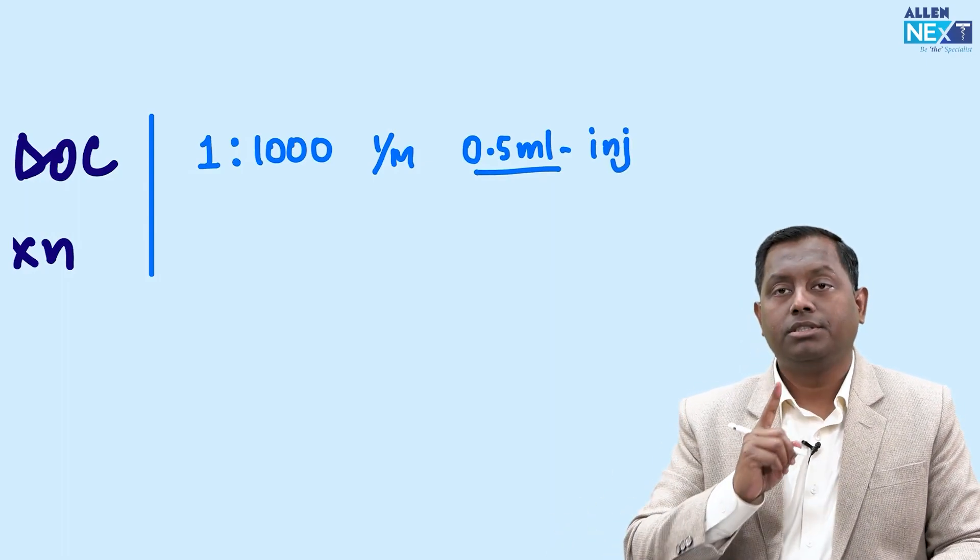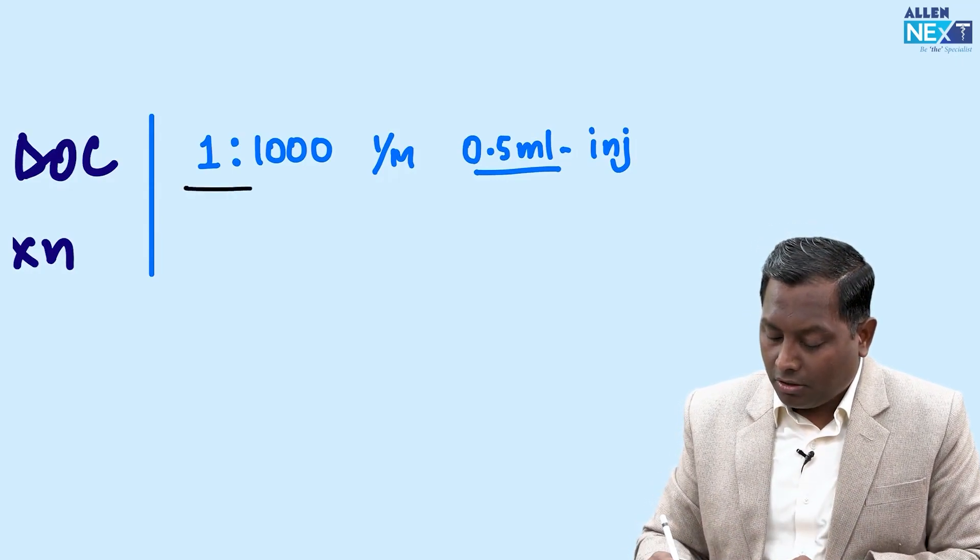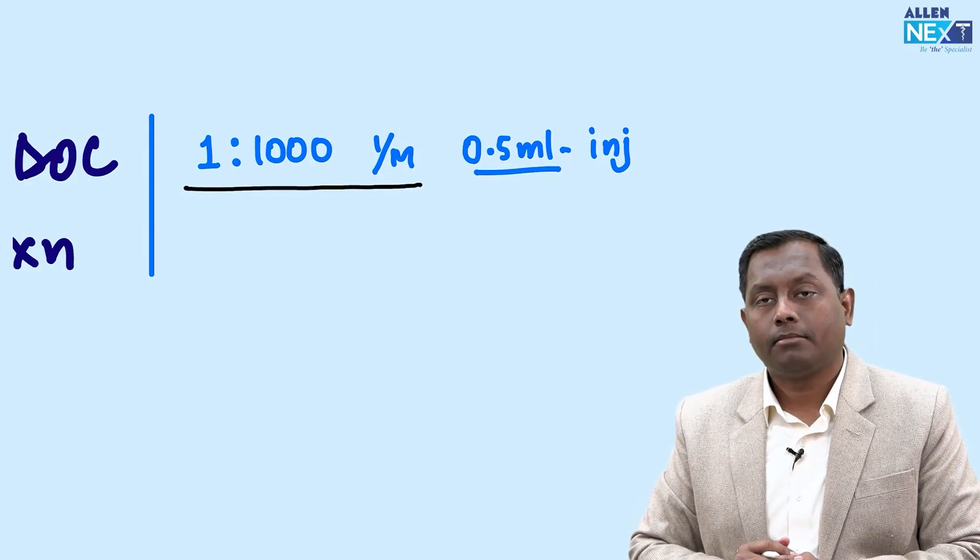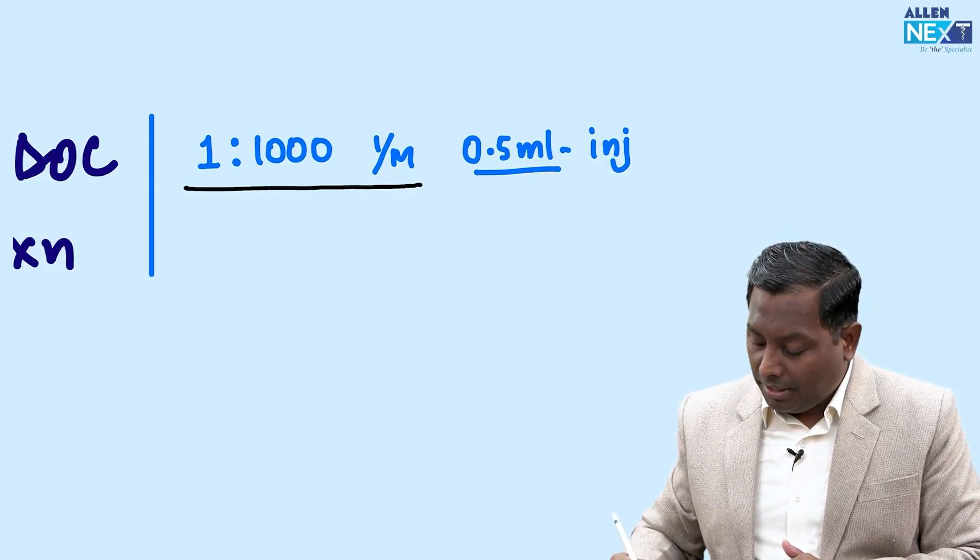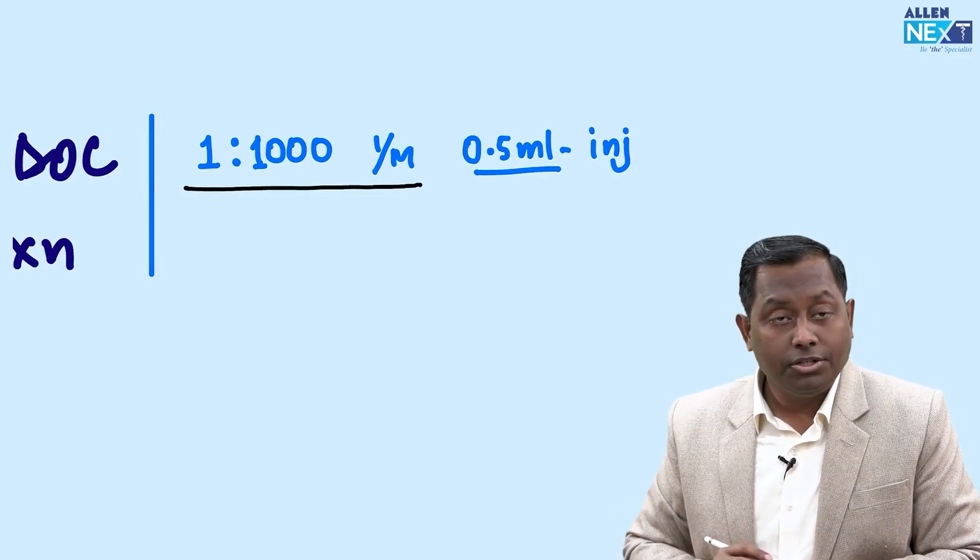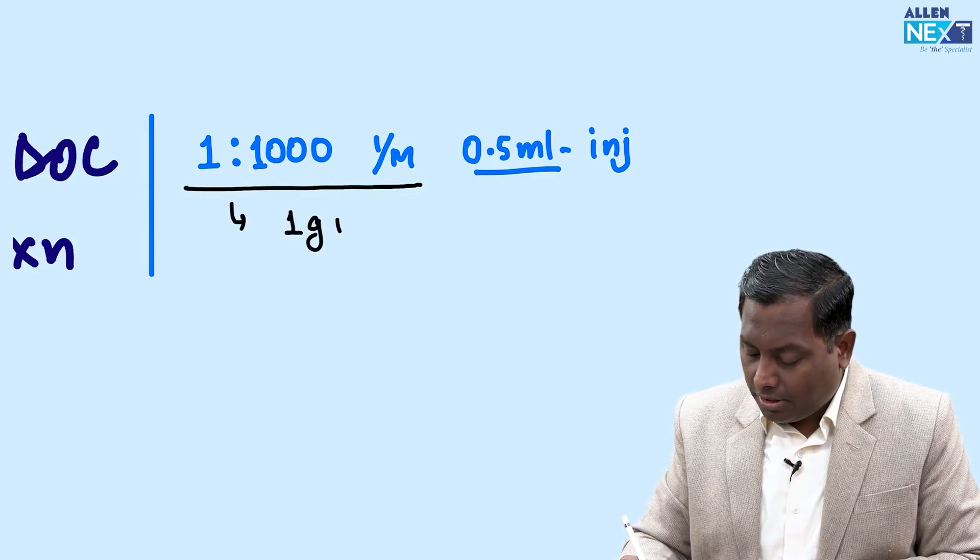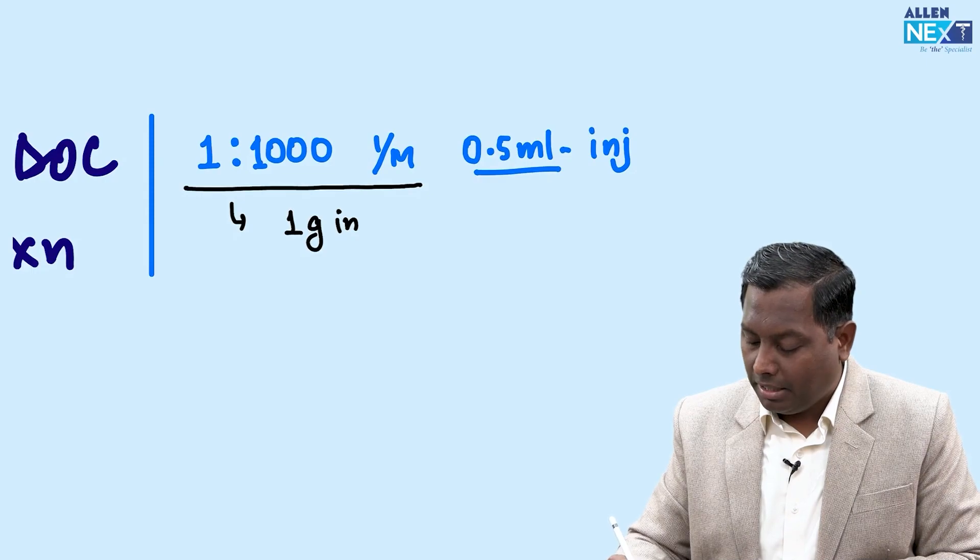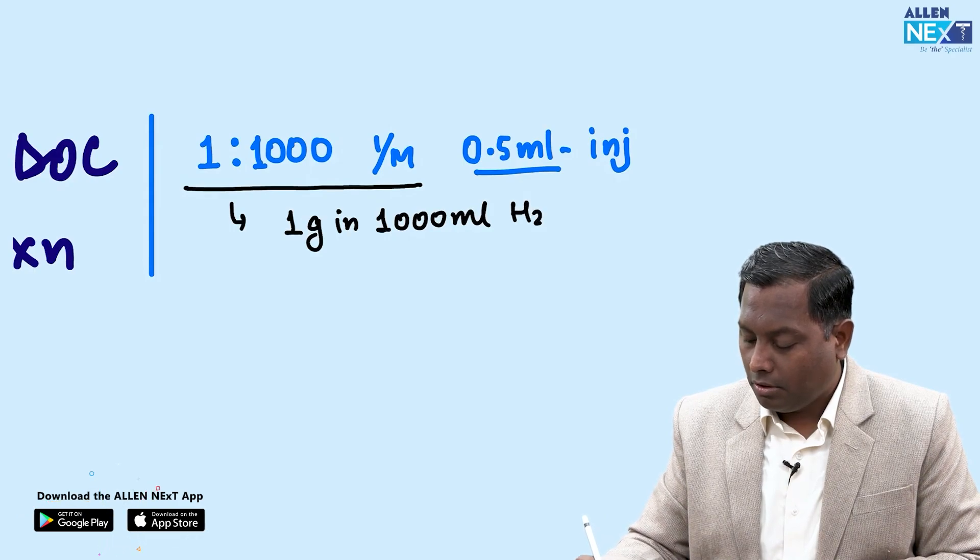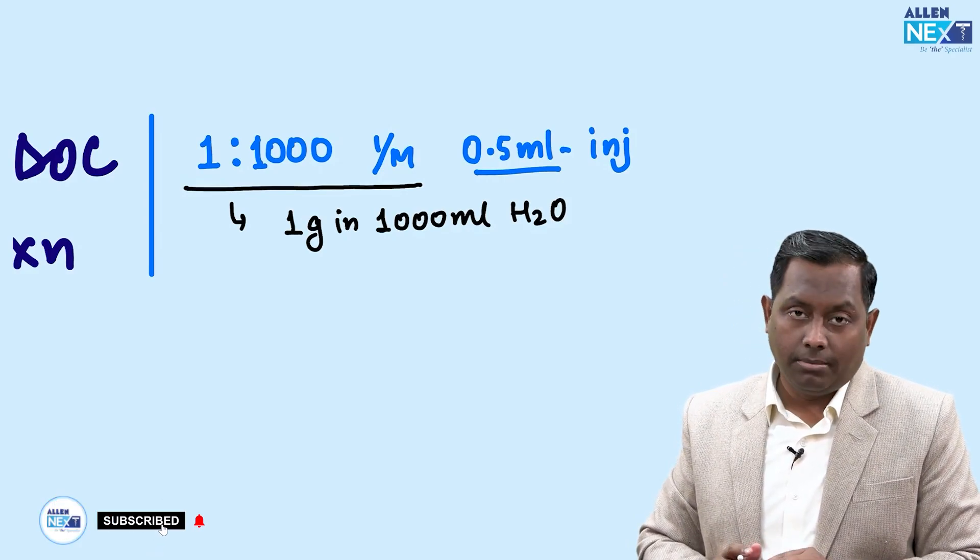The examiner asks: if you are going to take 0.5ml, how many milligrams of drug are given? In viva, examiners ask this and students get confused. What is the meaning of 1:1000? It means there will be 1 gram of drug in 1000ml of water or normal saline.